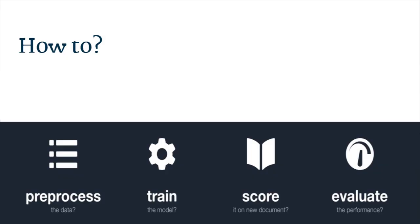Like any machine learning problem, there are basically four steps involved in the project. The first step is pre-processing the words so that we get a quality output. The pre-processing step on our machines took around 15 hours.